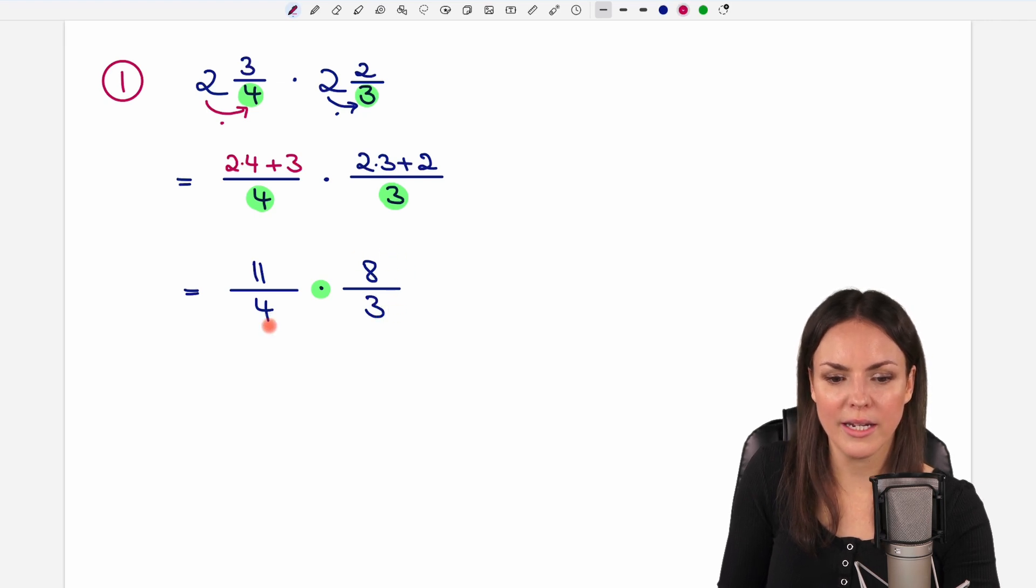So, if we see numbers on the top and numbers on the bottom that have common factors, like the 8 and the 4, we can cancel out 4, because both numbers are divisible by 4. So, 8 divided by 4 equals 2, and 4 divided by 4 equals 1.